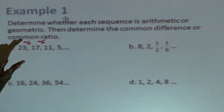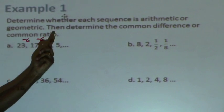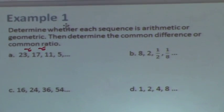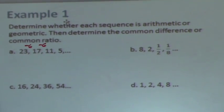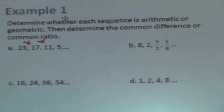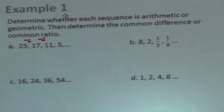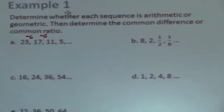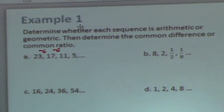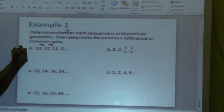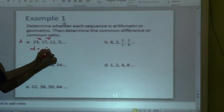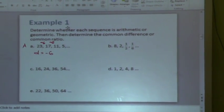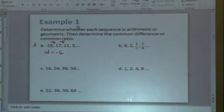If it doesn't work the second time, you can stop. It's automatically not arithmetic. What type of sequence is it? A. It is an A. And again, technically, I want you to put D equals negative six. A common difference is that negative six.